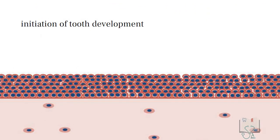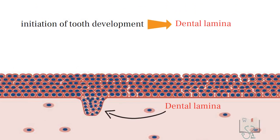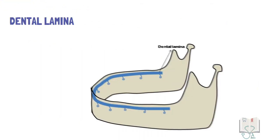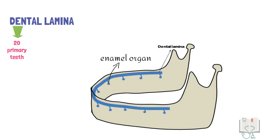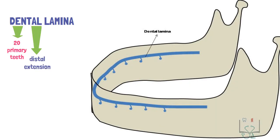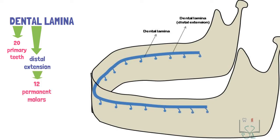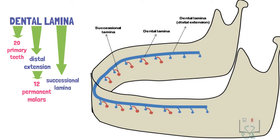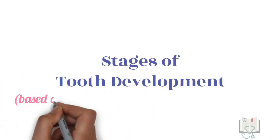The initiation of tooth development begins with the formation of the dental lamina. This dental lamina shows rapid proliferation of cells in specific places to form the enamel organ, which proceeds with individual tooth development. Dental lamina gives rise to all 20 deciduous teeth and by its distal extension to 12 permanent molars. A lingual extension from the dental lamina called the successional lamina gives rise to all 20 succedaneous teeth.